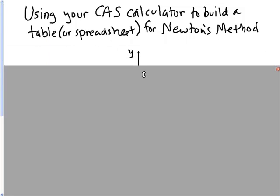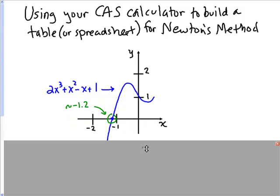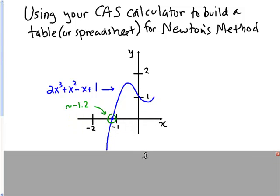I was looking at Lindelof's video and he showed you this graph, which is the graph of the function 2x cubed plus x squared minus x plus 1. And we can see that the approximate zero is about at negative 1.2.